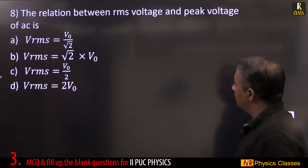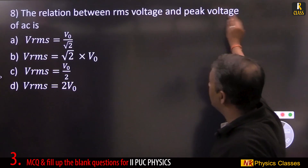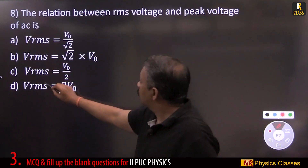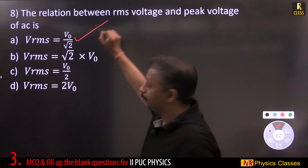The relation between RMS voltage and peak voltage is: V_rms = V₀ / √2.